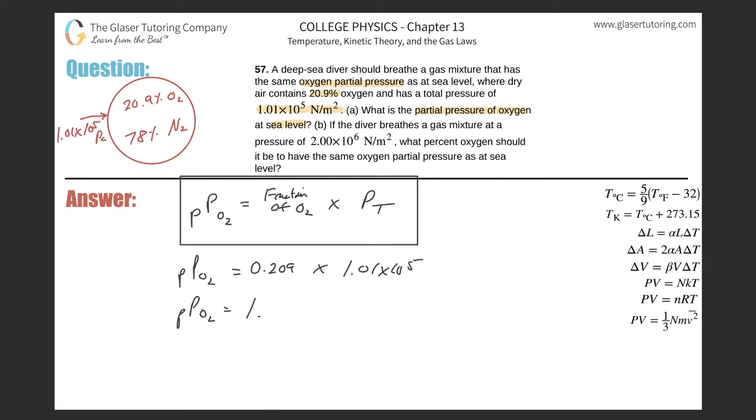So 0.209 times 1.01 times 10 to the fifth, and it works out to be now about 2.11 times 10 raised to the fourth, it appears, and that is in Pascals. Okay, so that takes care of letter A.